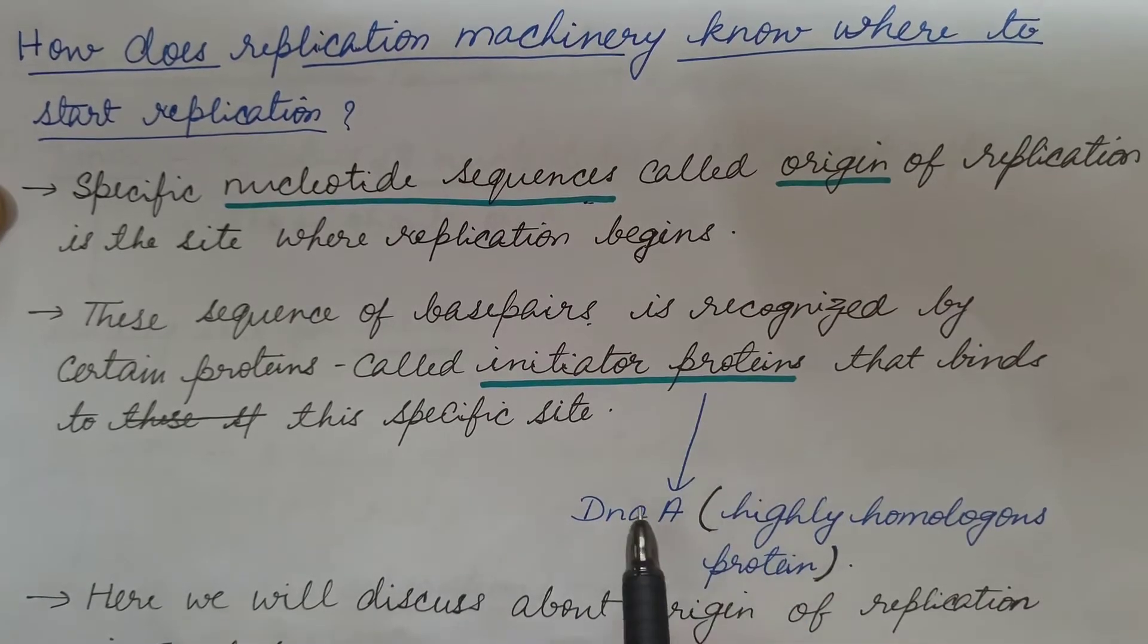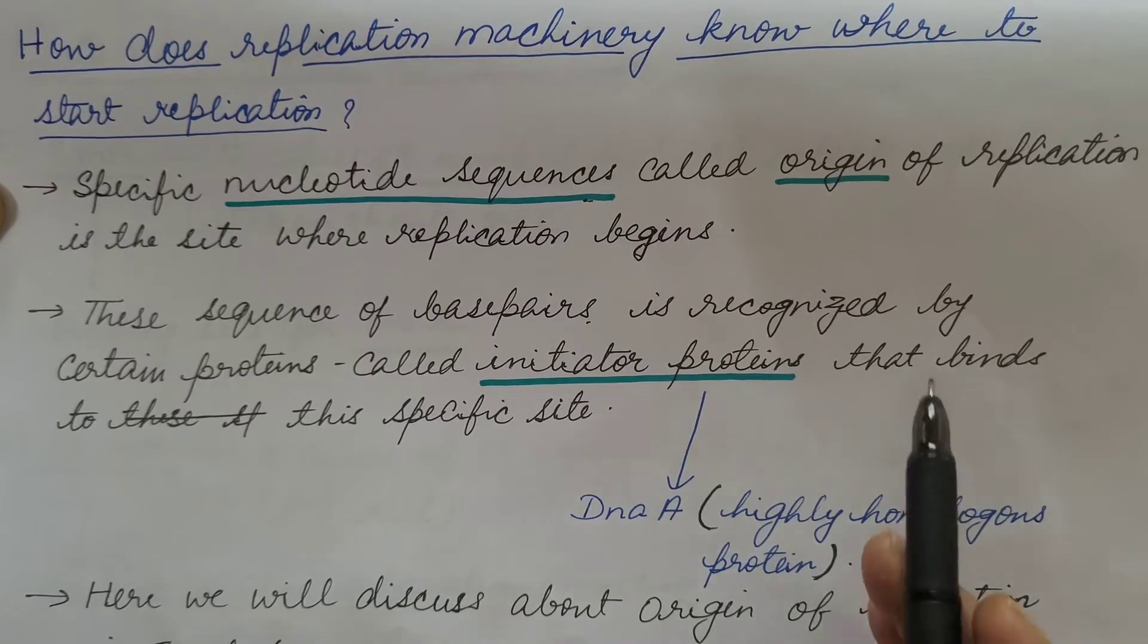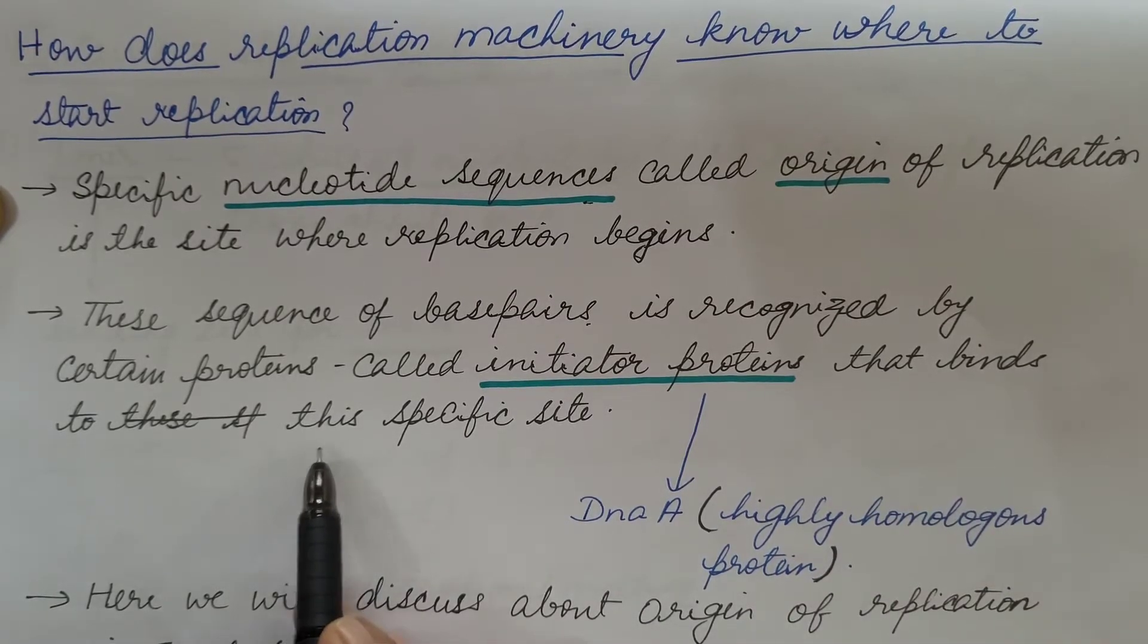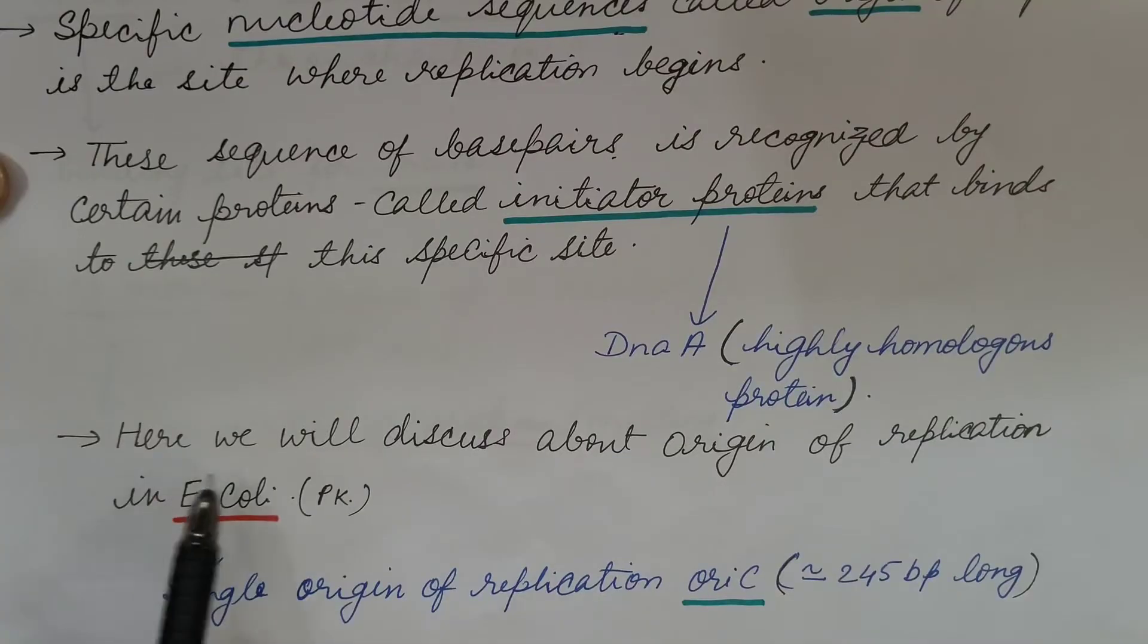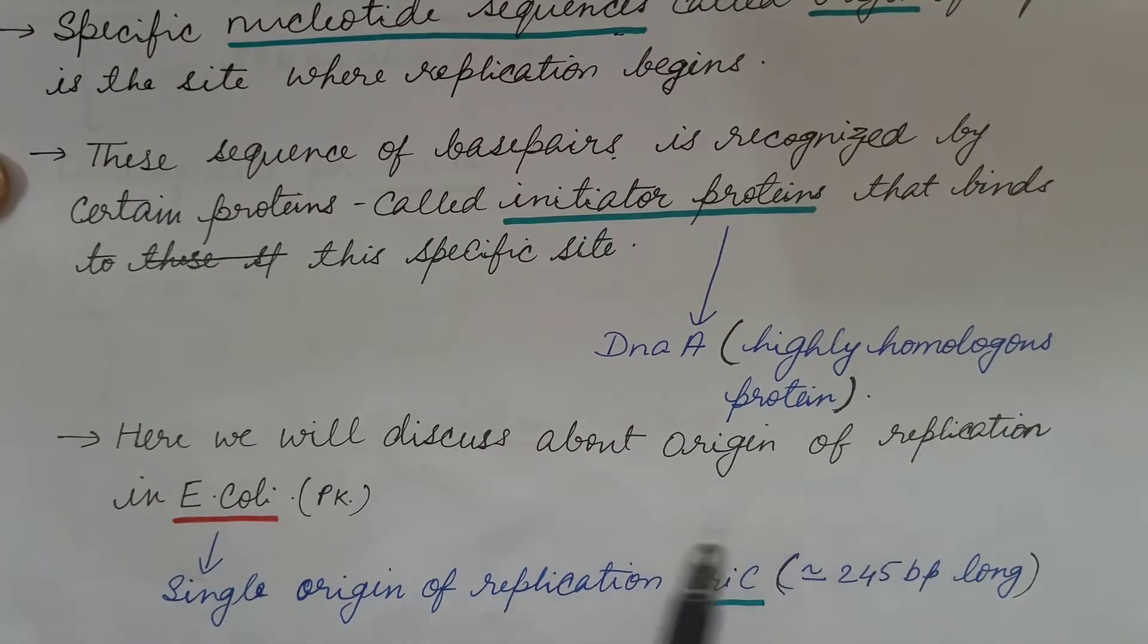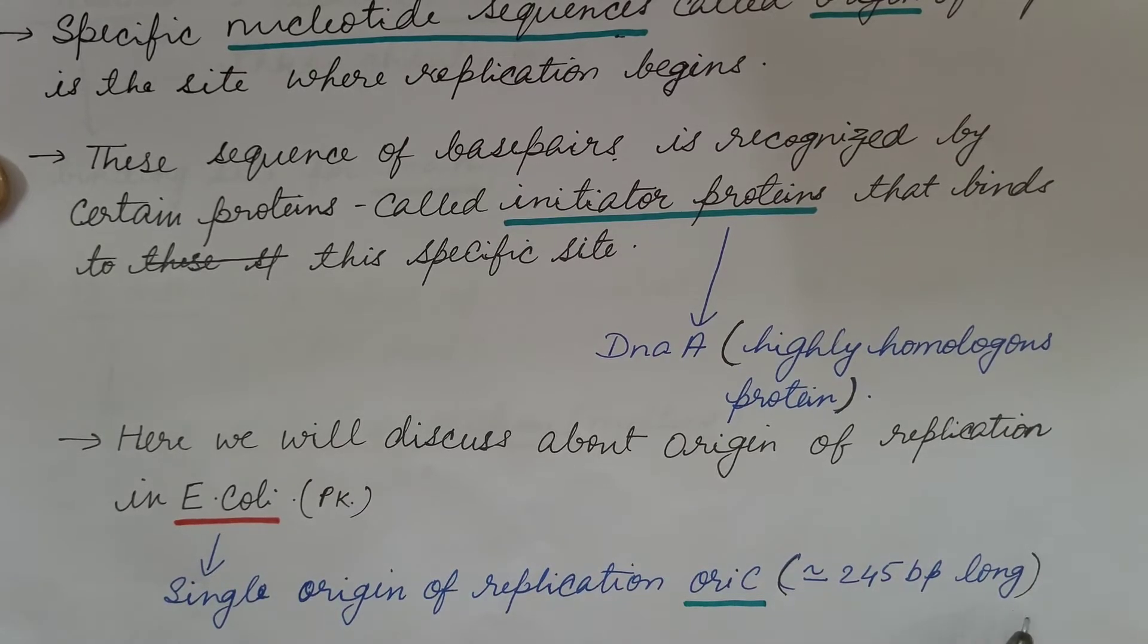In prokaryotes, it is DNA-A, a highly homologous protein and this binds to the specific site known as origin. Here we will discuss about origin of replication in E.coli. It has single origin of replication known as OriC and it is approximately 245 base pair long.